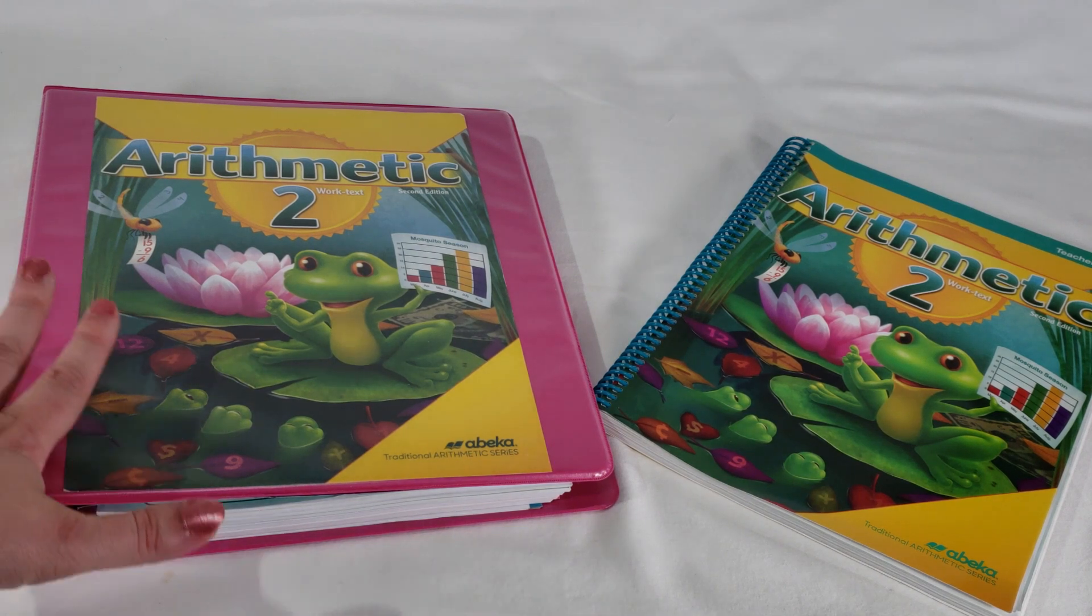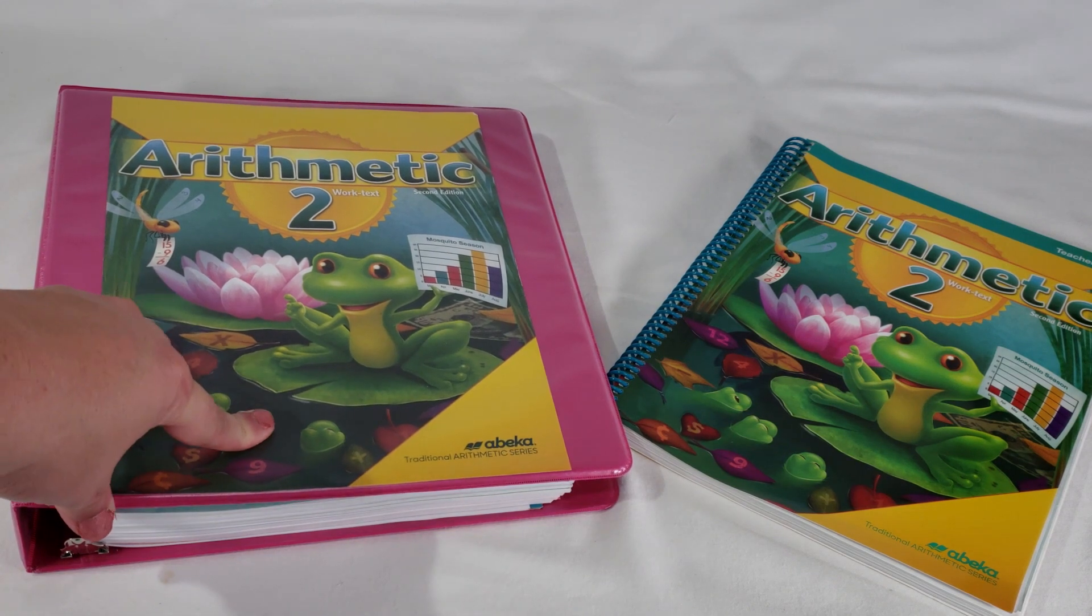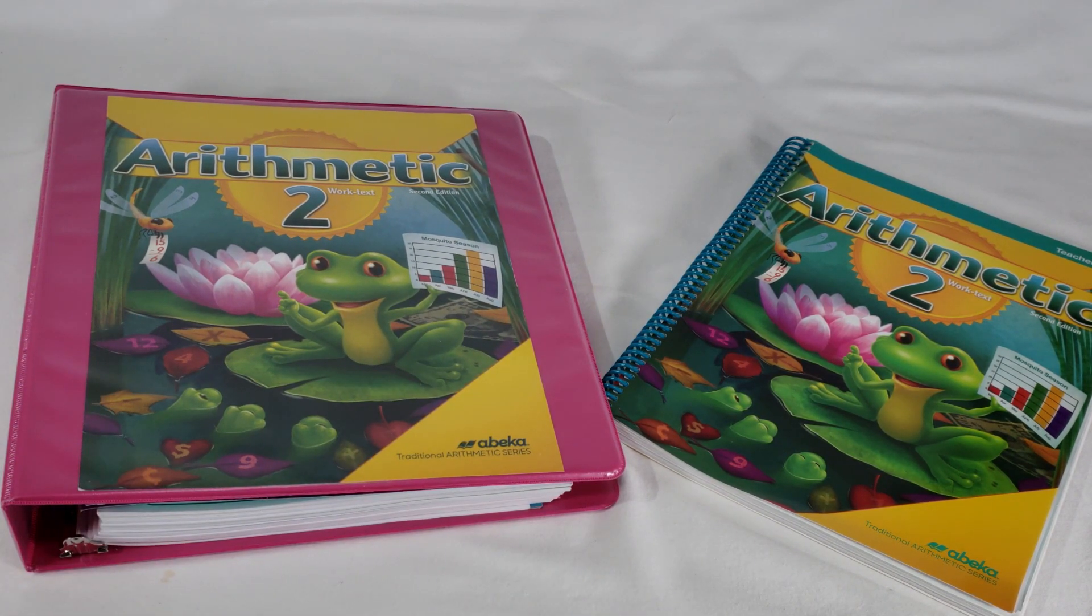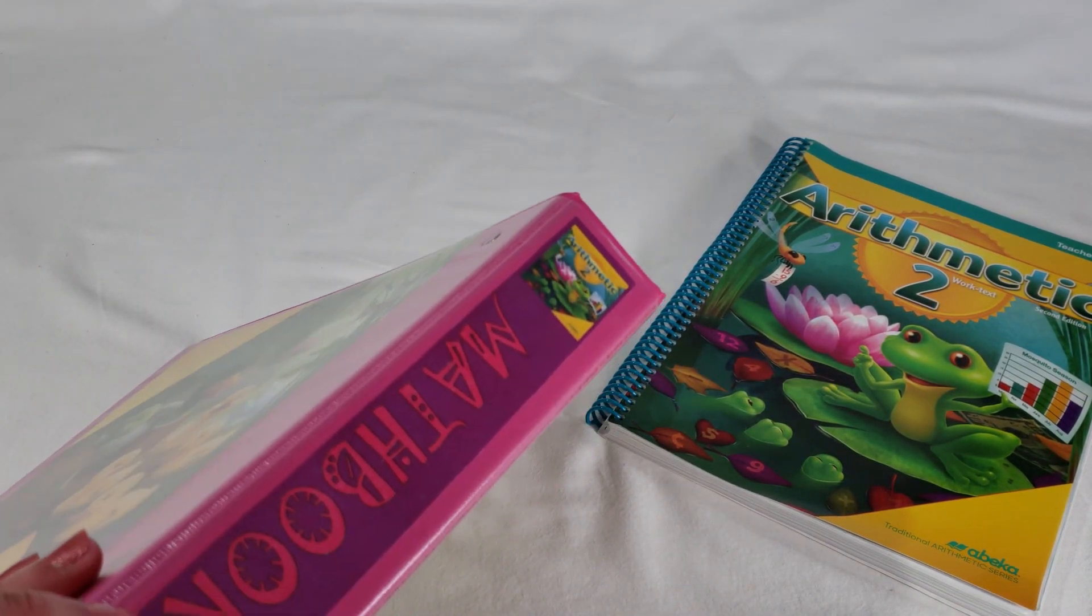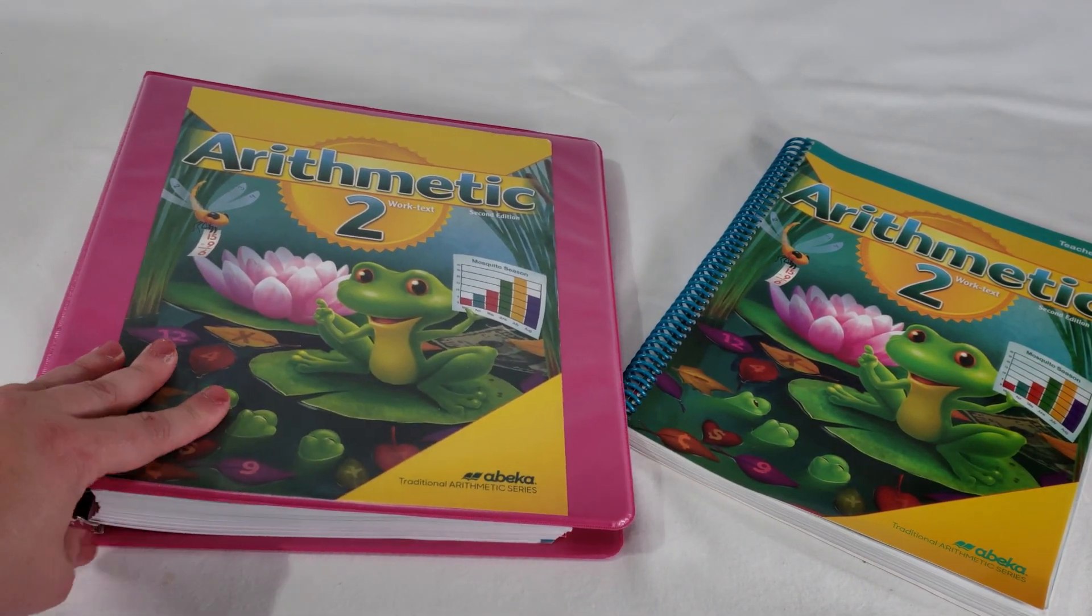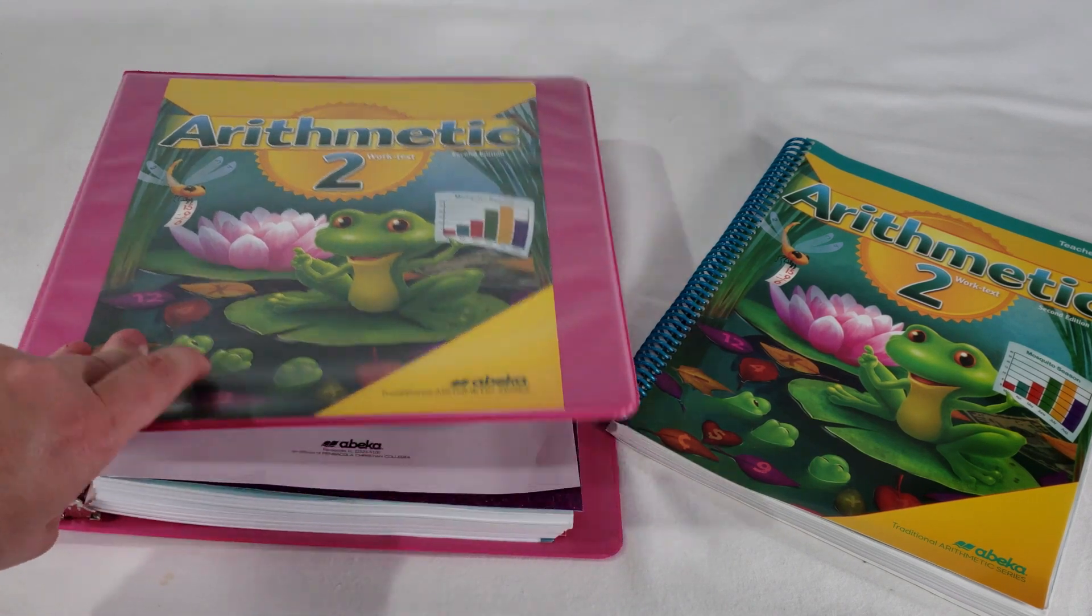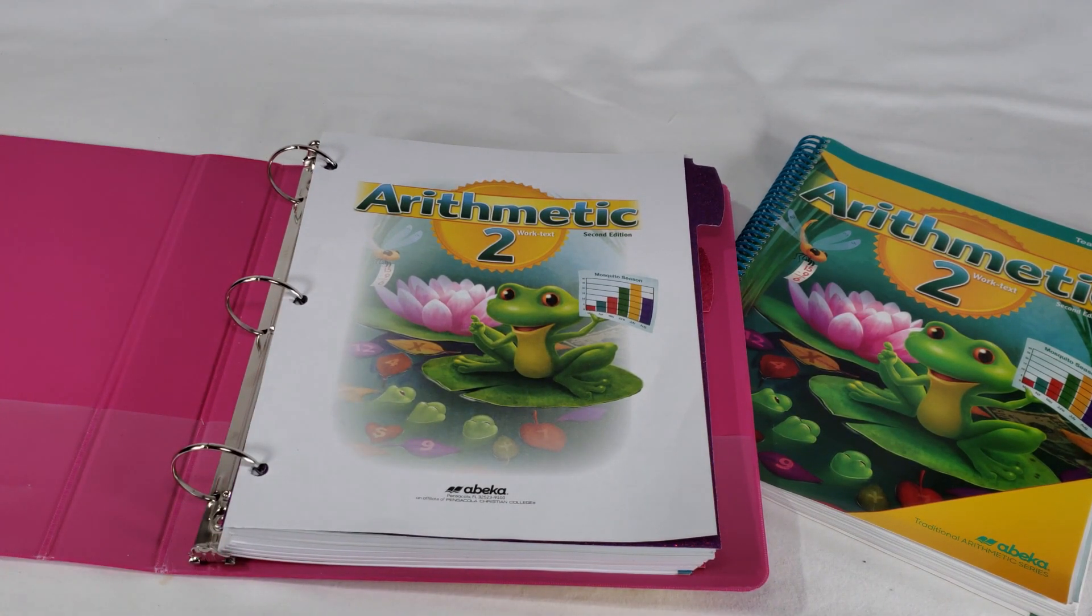Let me explain why the workbook is not a book and instead is in a binder. This is something that I really liked about Abeka - I was given the choice when I purchased to either buy the curriculum bound or unbound. When you buy it unbound, you still get the cover and the back cover. This is an inch and a half thick binder.